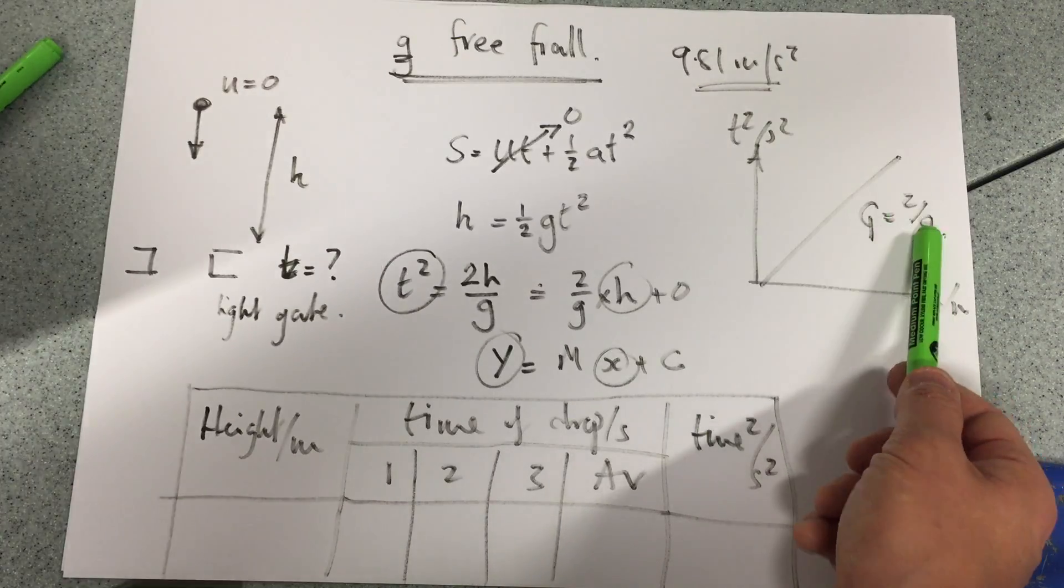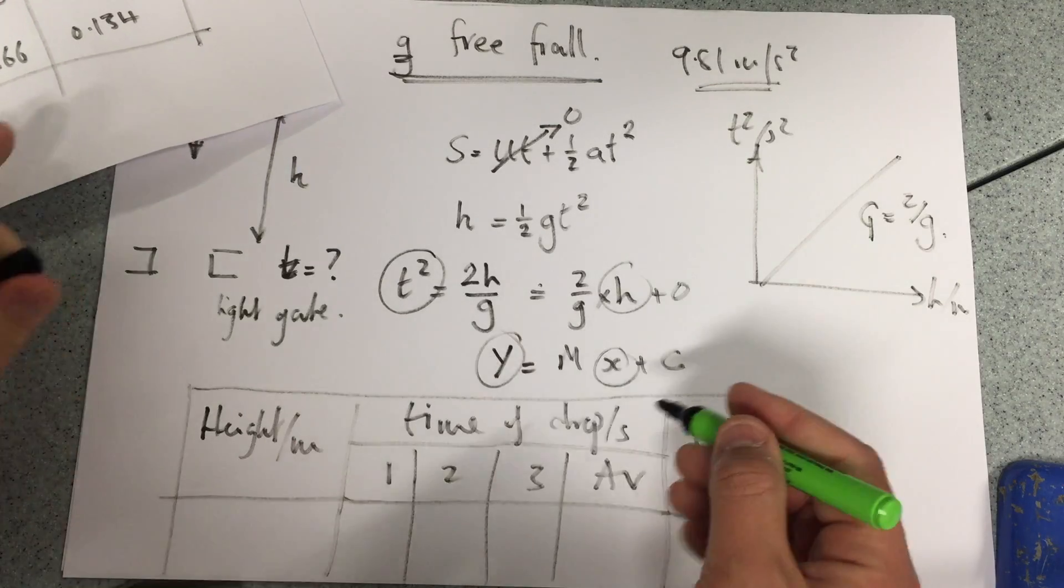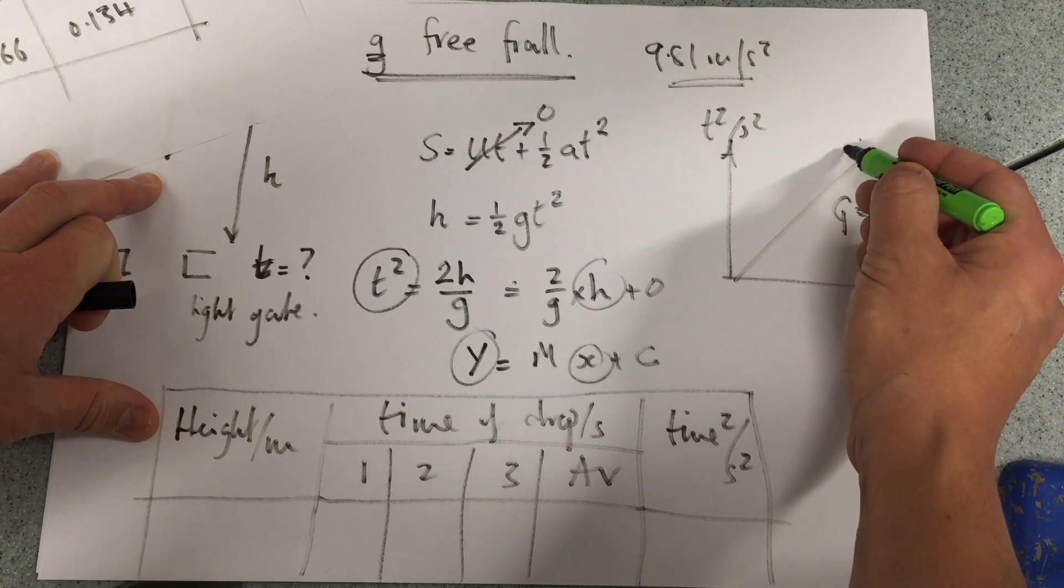And hopefully, your gradient should be 2G. If, however, it were going to go through like that,